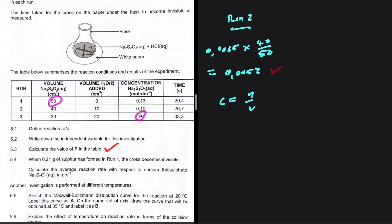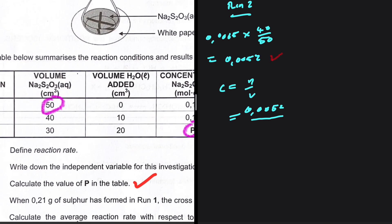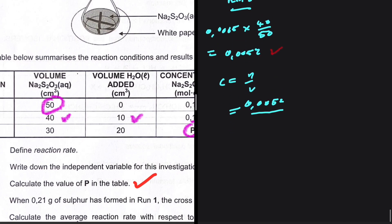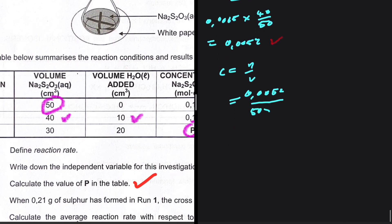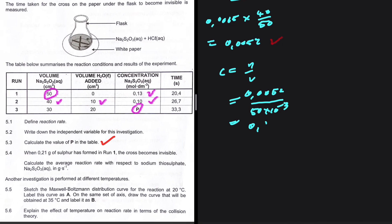The number of moles is 0.0052, and the volume is not 40 but 50, because volume is additive — 40 plus 10 gives 50. So we divide by 50 × 10⁻³. Putting that in the calculator gives 0.1, just as shown in the table. Now let's determine p.